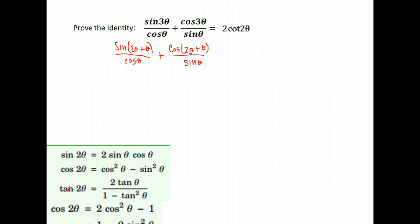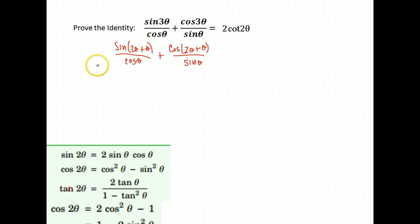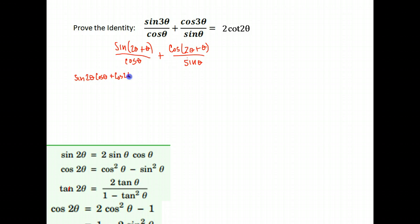From there, we need to write out what we get when we do sine of 2θ plus θ. If you don't have it memorized, take out your notes. The sum identity tells us to do the sine of the first angle — sine 2θ — times the cosine of the second angle, cosine θ, plus the cosine of that first angle, 2θ, times the sine of the second angle, θ. That's all over cosine θ.